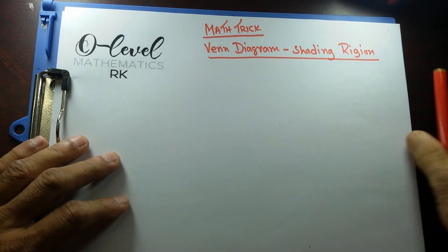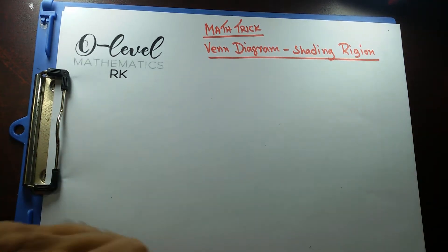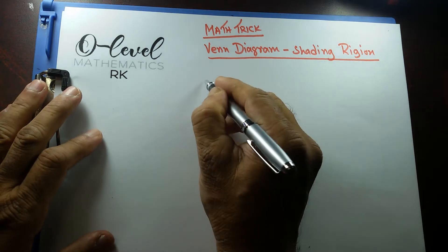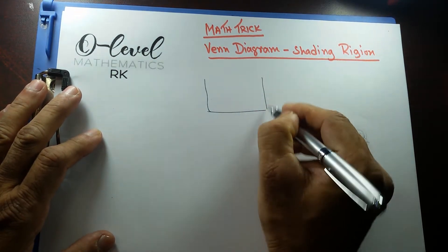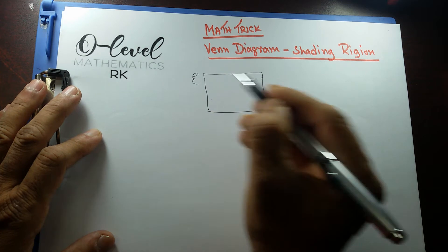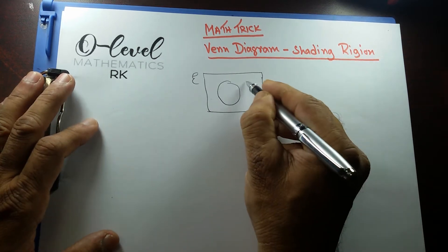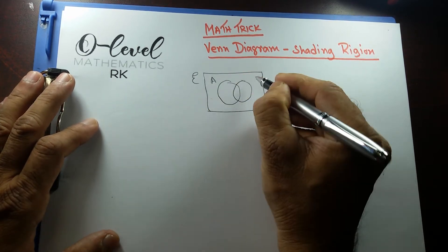Let's say I have this Venn Diagram drawn. It's a rectangular box with universal set and two overlapping circles are given A and B.